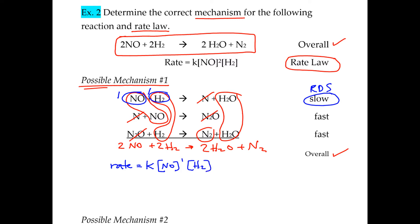We've never taken coefficients and made them exponents before. The only time you can ever do that is when you have a mechanism — you can never do it from the overall equation shown in red. You can only do it from the individual steps in the mechanism; that's where you take the coefficient and make it into an exponent. So this would be the rate law so far. We also need to double check that each reactant in the rate law is an actual reactant of the overall equation.